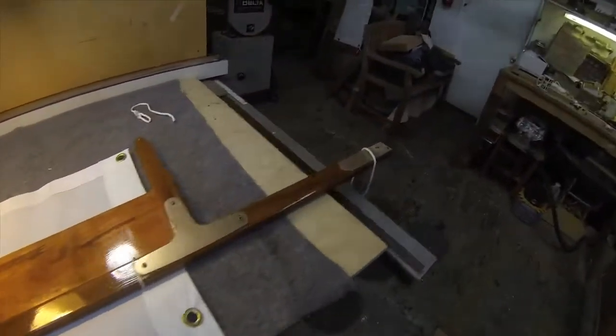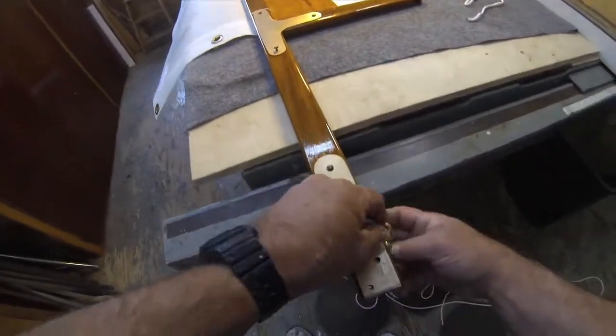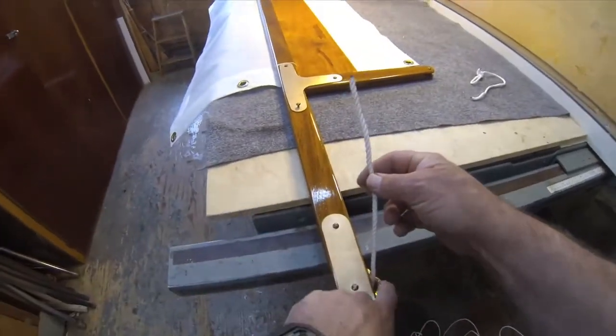So what we do in order to bend the sail on is run the halyard line through the fairlead here, also called the eye strap.